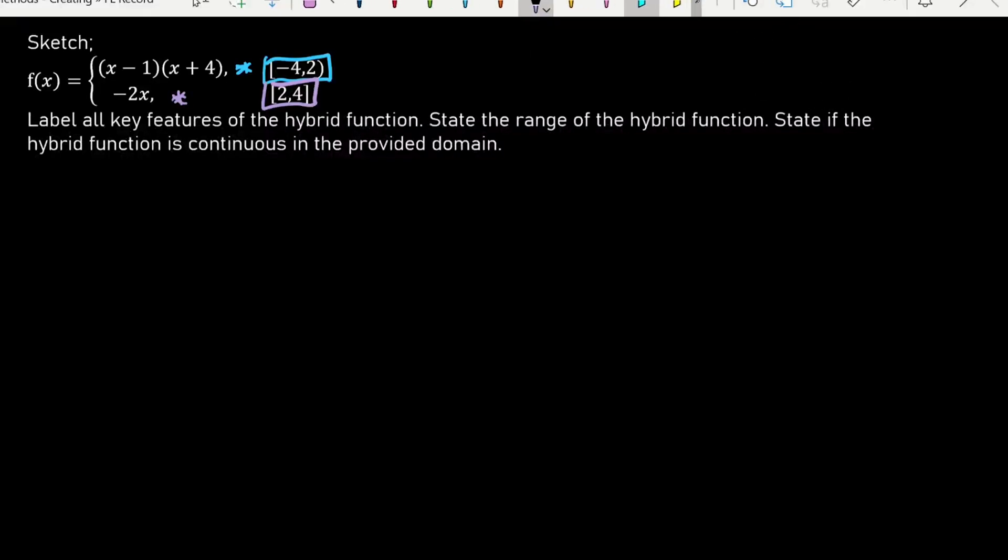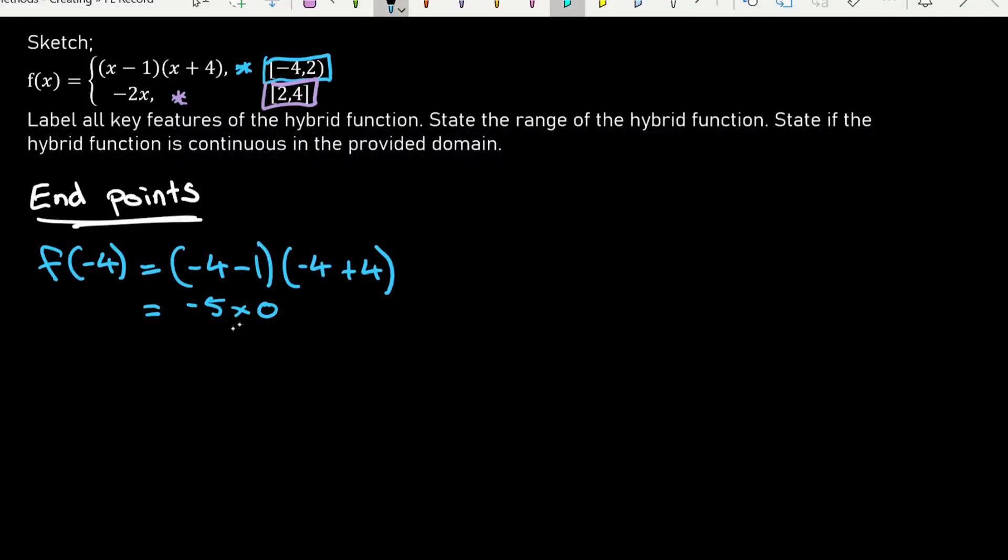Now when I'm putting together a sketch for hybrid functions, the first thing that I want to check is what are the end value points of each function. So here we can see with the quadratic line, if I substitute this end point of negative four, what I'm going to get is the point negative four, zero. And this little square bracket indicates that I'll actually want to include that point, so I need to be careful when I'm putting that together.